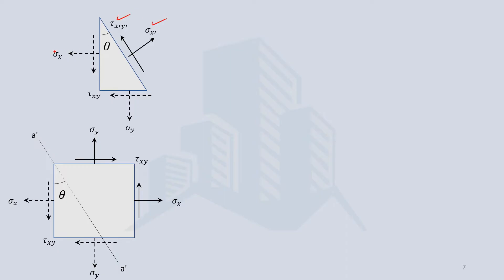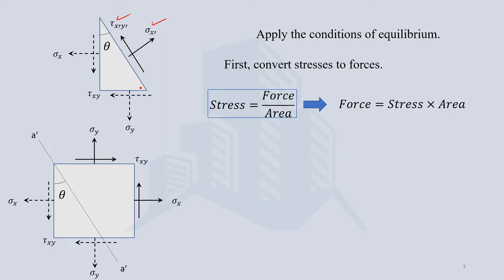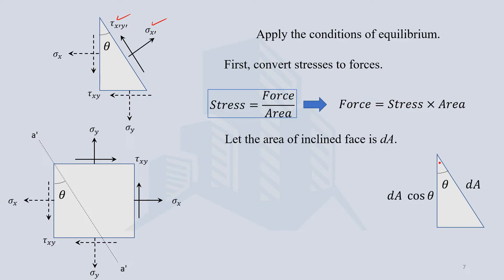To find these unknowns in terms of the current known plane stresses, we apply conditions of equilibrium. First, we convert stresses into forces, since stress equals force divided by area. If the inclined face has area dA, then the area on the x-plane is dA cos theta and the area on the y-plane is dA sin theta. Multiplying stresses by their respective areas gives us the forces.